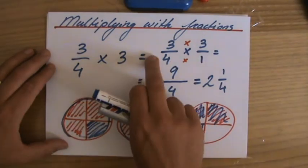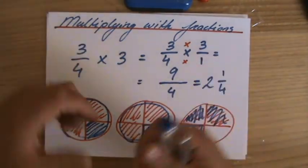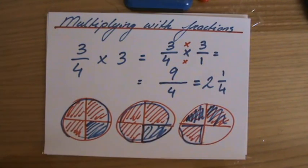You multiply the numerators, you multiply the denominators, you simplify. I'll see you at the next video for example questions.